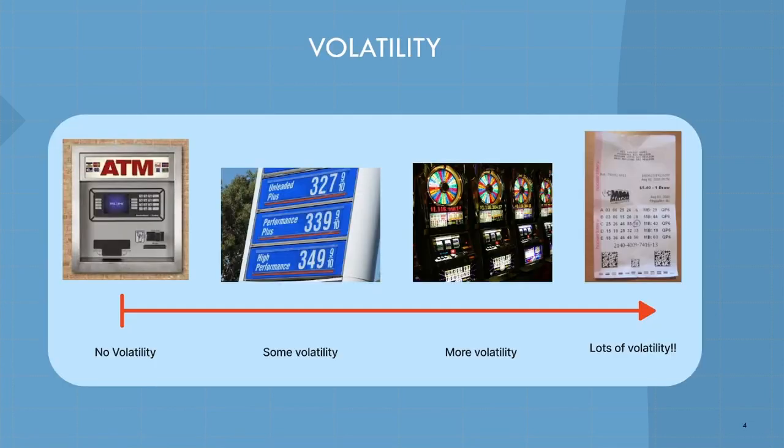Next concept we're going to look at is volatility. Before I go into the formulas for volatility, let's understand intuitively what volatility is. I have a chart here, and starting at the left, this is the least volatile game you can play. This is an ATM machine. We don't really think of it as a game because it's so predictable, and because it's predictable, that ensures it has no volatility.